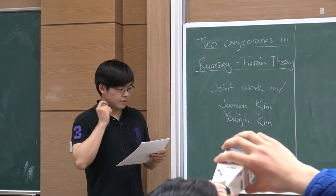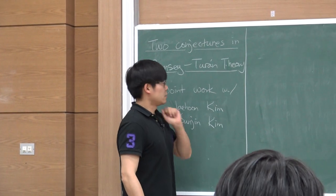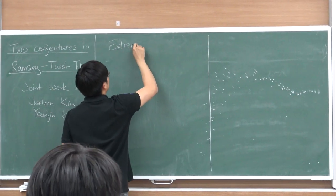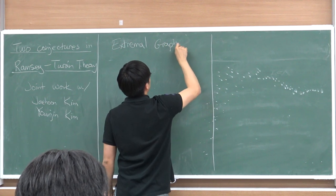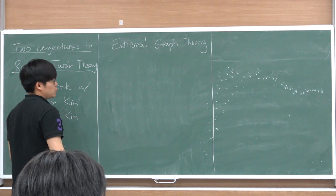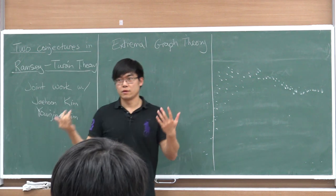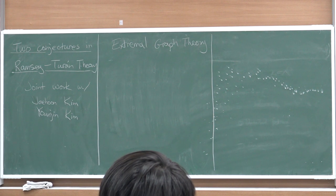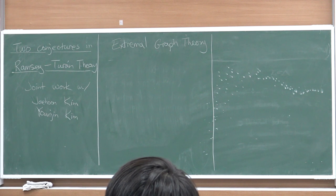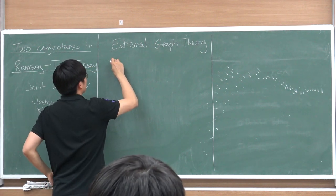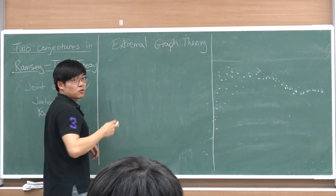Let's start with a basic, classical problem in extremal graph theory. Usually the setup is we have some family of combinatorial objects with certain properties, and then we want to optimize certain parameters over the objects in this family. The very classical extremal problem is to consider the containment of a subgraph.